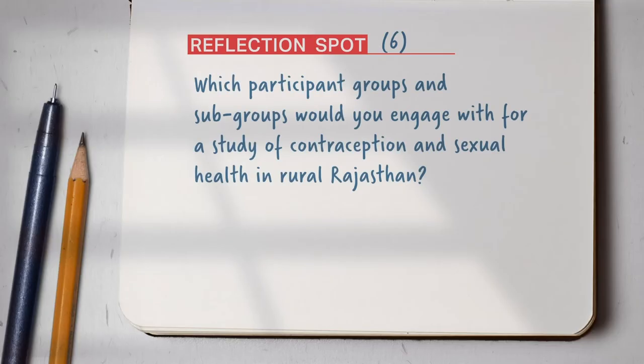Let us pause here for a moment and recollect the project we had discussed earlier — the work done in Rajasthan to develop communication material to encourage the use of contraception among the rural population. In that study, the participant group described very broadly was the rural population. But there must have been subgroups within that. If you were doing that study, what would be the various participant groups or subgroups that you would engage with? Take a minute and note down your answers.